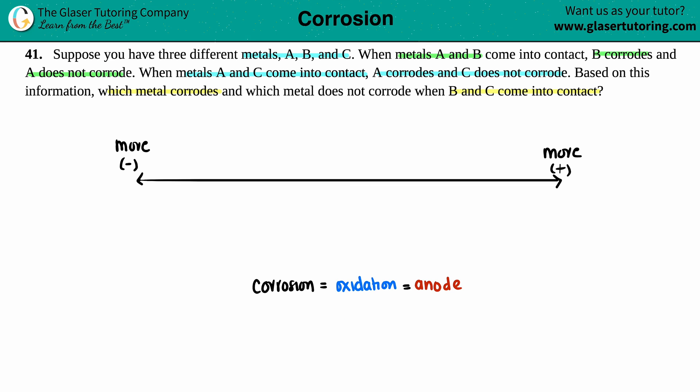Just know that the lower value you get, or the more negative, is always the one that is going to be more likely to oxidize. And because it's more likely to oxidize, it's going to be more likely to corrode. So that's the mentality here.